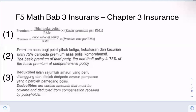For motor insurance, we have three different types. First is the comprehensive policy. Second, we have the third party, fire and theft policy. And the last one is the third party only. To calculate the premium of the third party, fire and theft policy, it is 75% of the comprehensive. If it's a third party only policy, you just need to look at the table, and that is how much you have to pay.